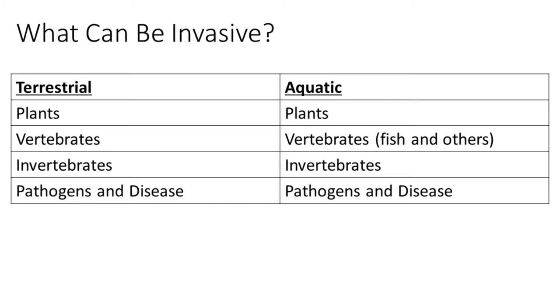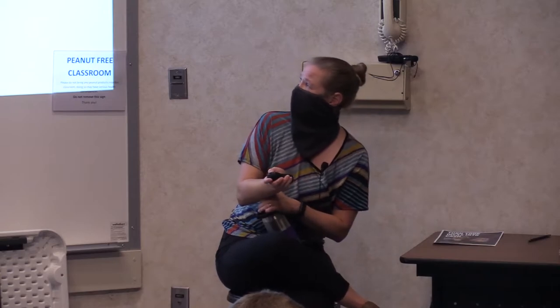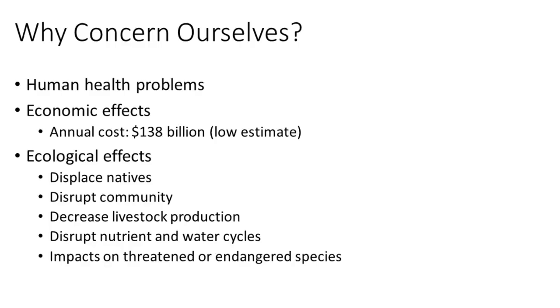Usually we don't notice things until they cause a problem. They have to cause economic issues — they have to cost somebody money — or environmental harm, which is really the deep-down heart of it. But we also notice when these things cause harm to human health. Causing harm to human health and costing us money are two big reasons these things get noticed. These can be items found on land (terrestrial) or in water (aquatic), and they can be vertebrates, invertebrates, plants, and even diseases.